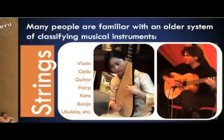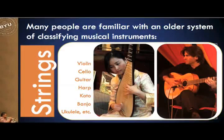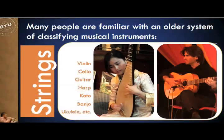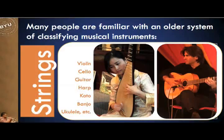Now there are many people familiar with an older system of classifying musical instruments — what we call families of instruments. The string family includes familiar instruments such as violin, cello, guitar, harp, koto from Japan, banjo, and ukulele from Hawaii. Our pictures here include a Chinese pipa (P-I-P-A) and a guitar. We'll study more about Chinese instruments later in the course.